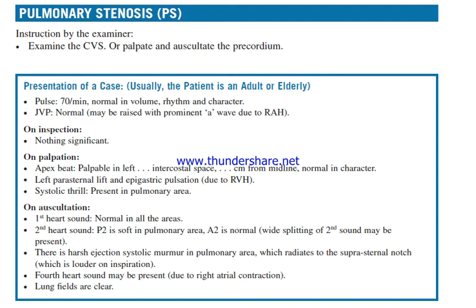JVP may be raised with a prominent A wave due to right atrial hypertrophy. On inspection, nothing significant. Apex beat is palpable in the left intercostal space, centimeters from midline, normal in character.